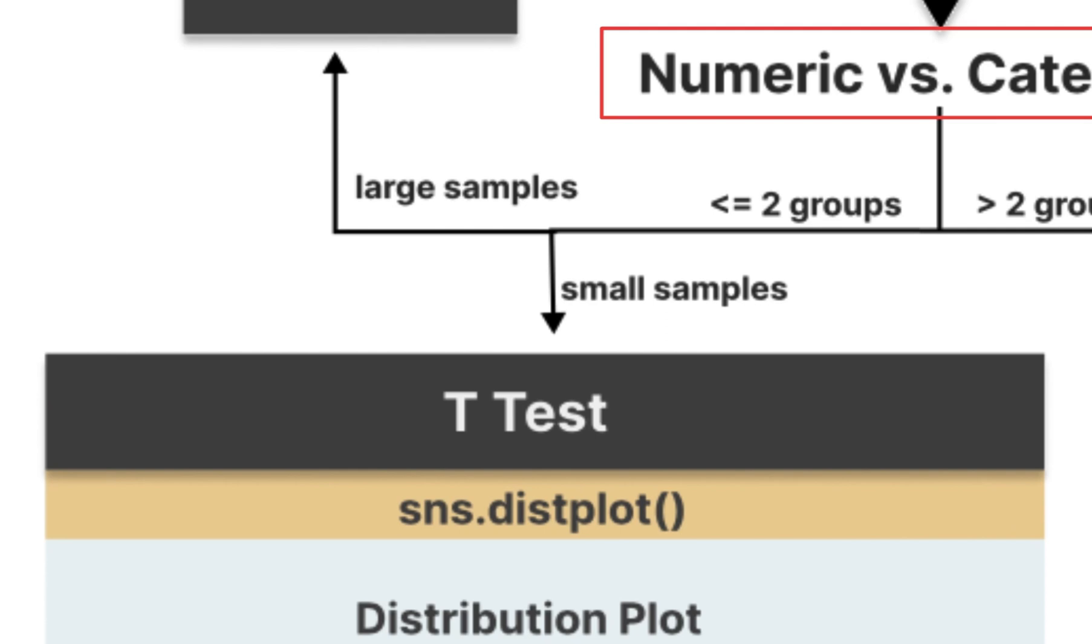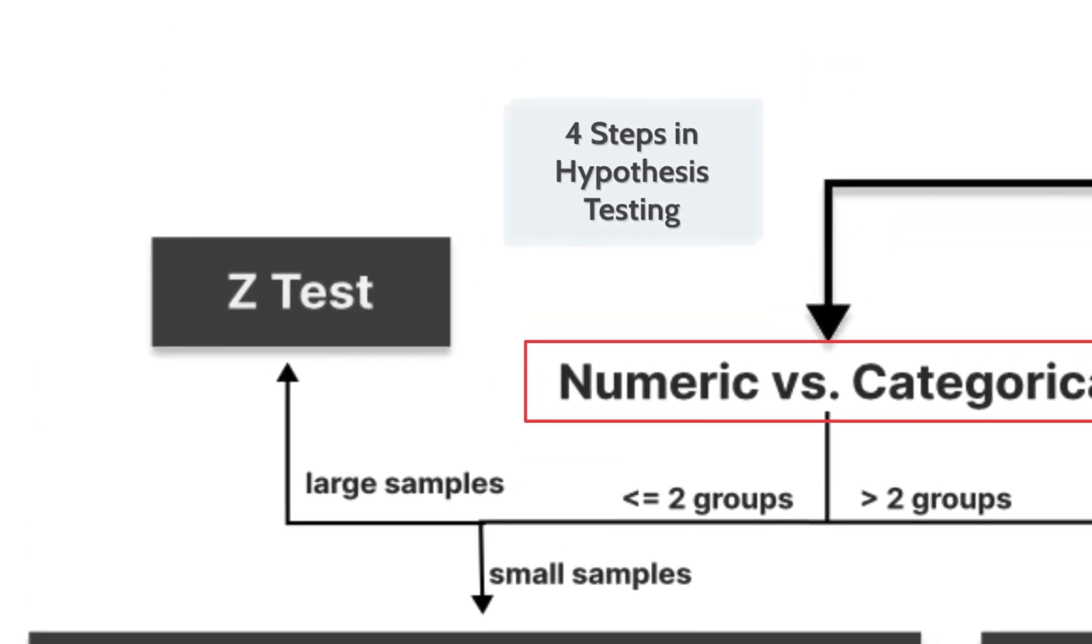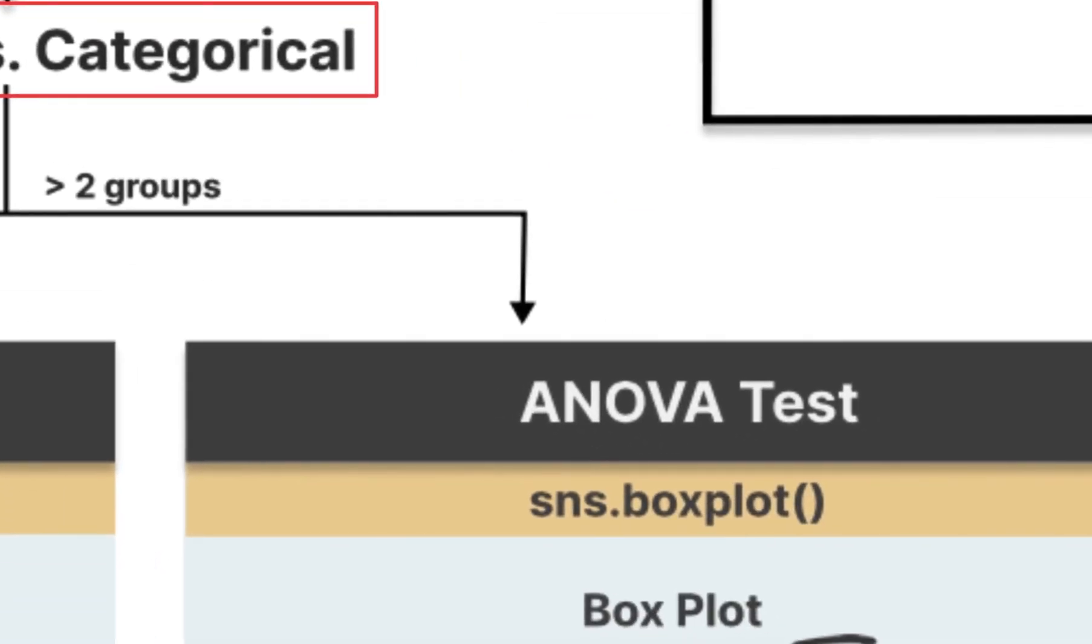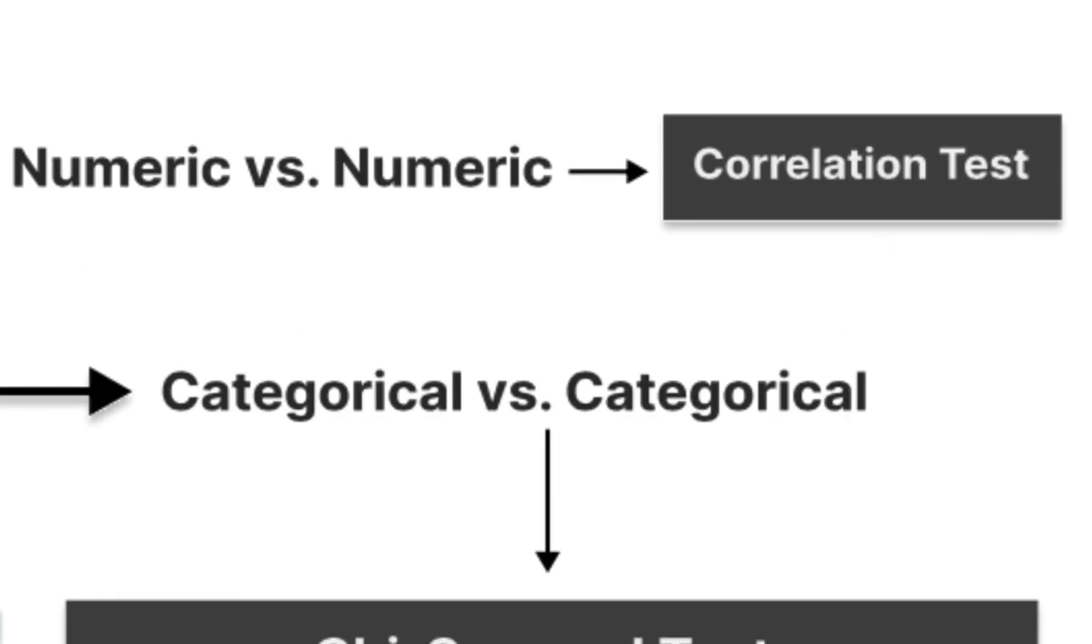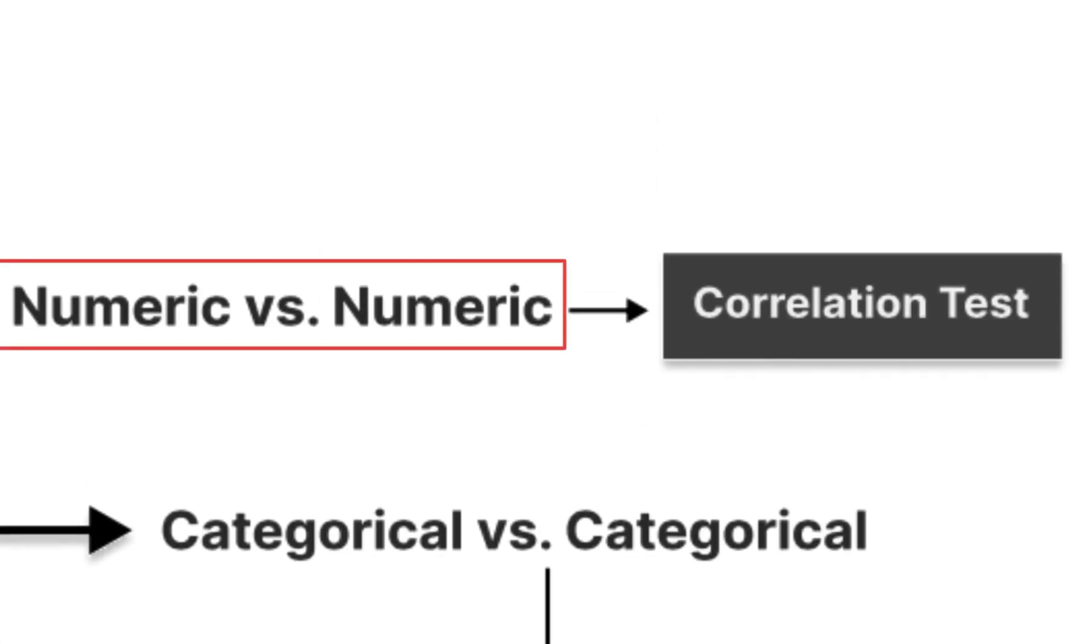T-test is commonly used to compare a categorical variable with two groups against a numeric variable when the sample size is small. I will explain more in details later in the video. Z-test has very similar application to T-test, but it is preferred when the sample size is more than 30. ANOVA test is used when comparing the values of two or more groups. Chi-squared test is for comparing the relationship between two categorical variables, whereas correlation test is used for examining the relationship between two numeric variables.